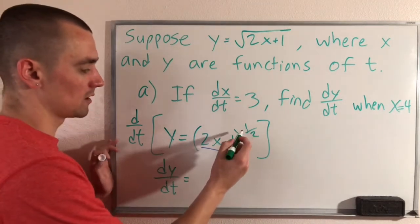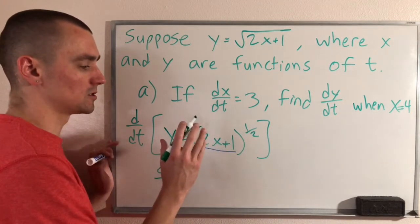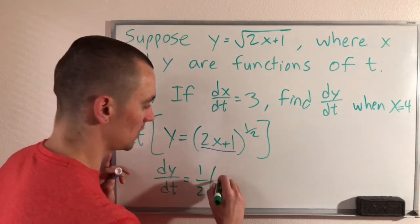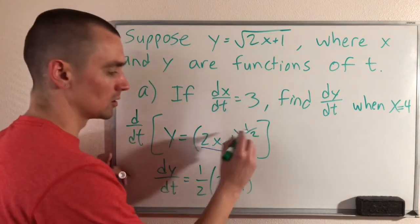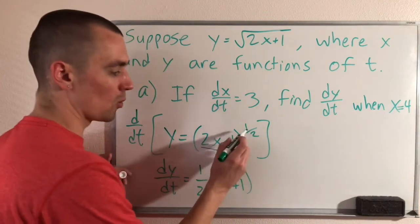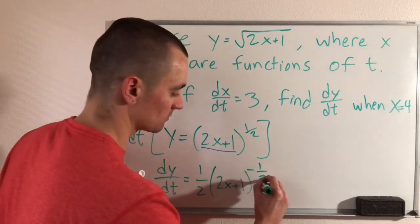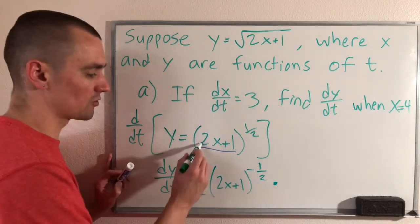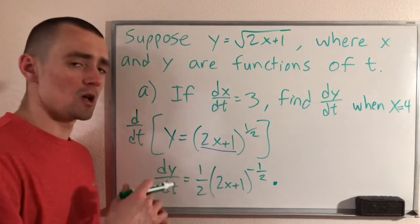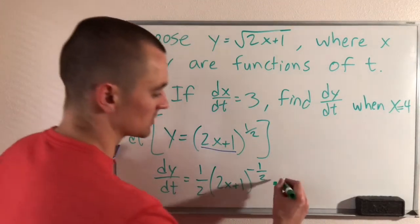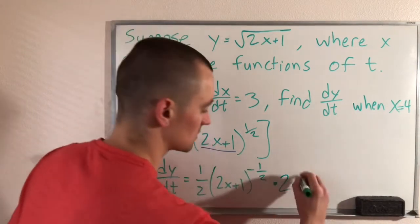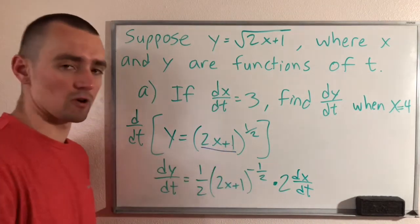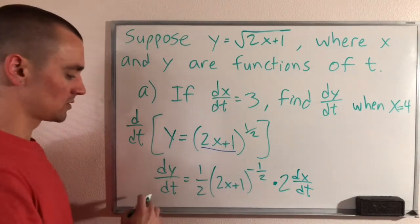So taking the chain rule would say to do the derivative of the outside, leave the inside alone. So bring the 1/2 down in front, leave the 2x plus 1 alone, lower the power by 1. So 1/2 minus 1 would be negative 1/2. And then we have to multiply this by the derivative of the inside function. The derivative of 2x plus 1 with respect to t is just going to be 2 times the derivative of x, which is dx/dt. And then the derivative of a constant is just 0. So that's not going to do anything. So here's our derivative.